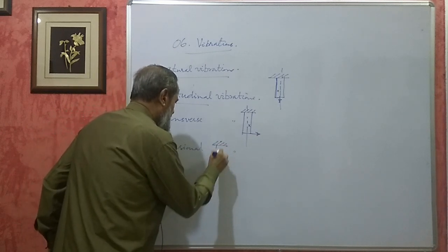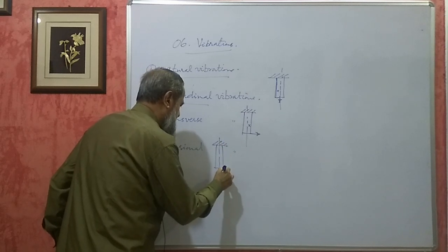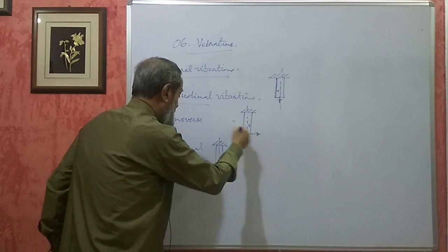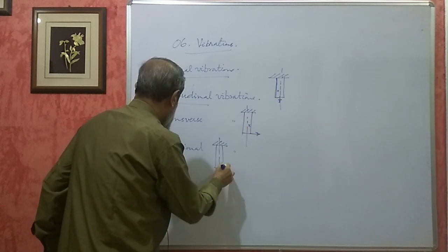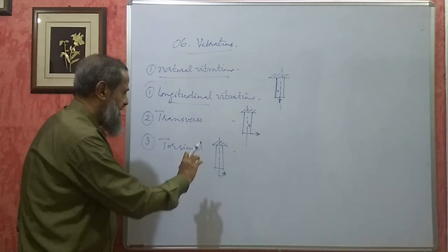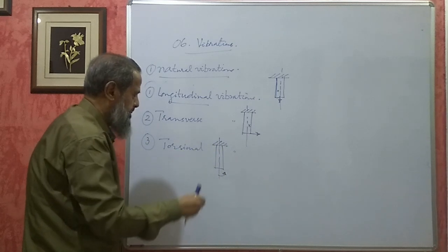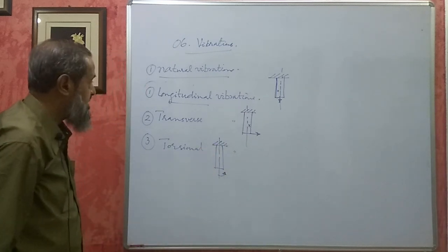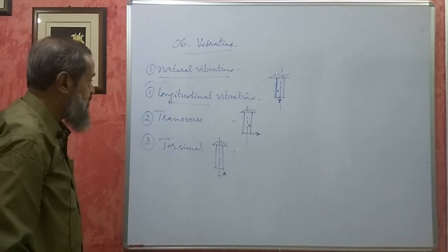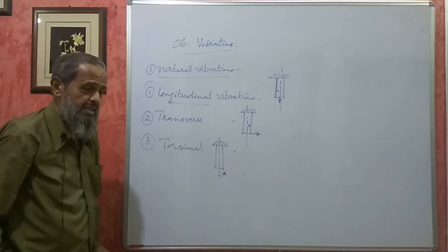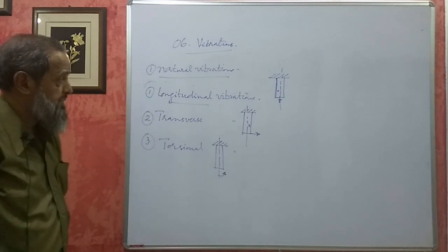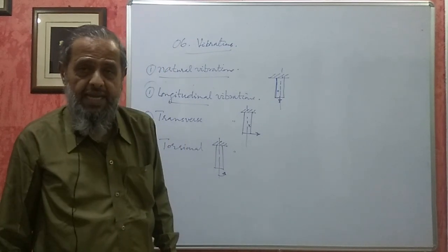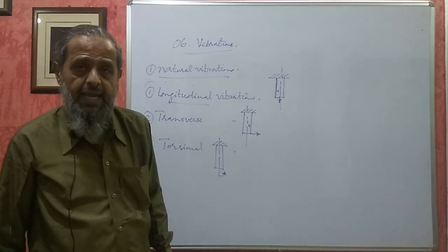In torsional vibration, I give a twisting moment to the body — I twist it and leave it. The particles vibrate in a circular direction about the axis of the body, and the body is subjected to shear stress. These are the three types of natural vibrations. Only theory will be asked — no numericals. This completes our Mechanics of Machines for third semester. Please subscribe, comment, share, and like. Thank you.